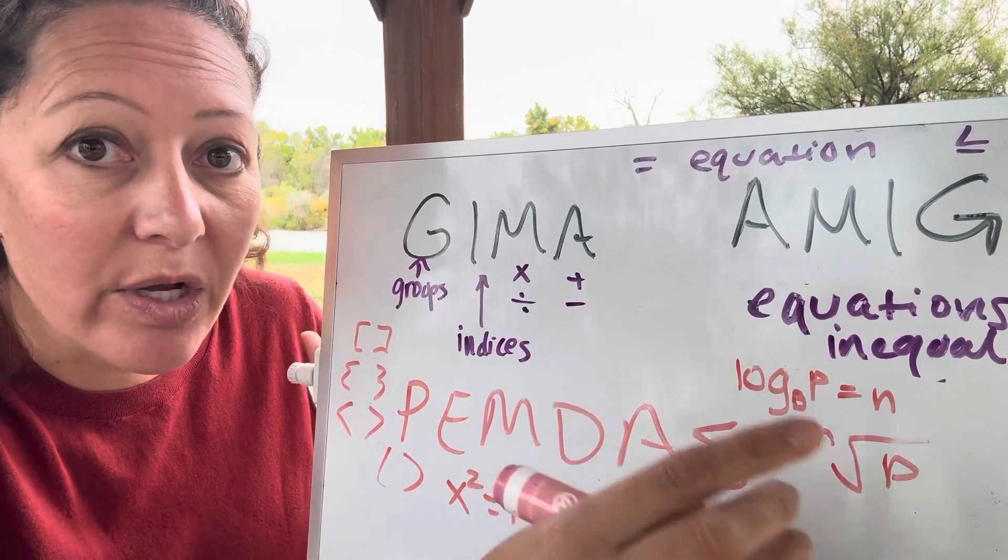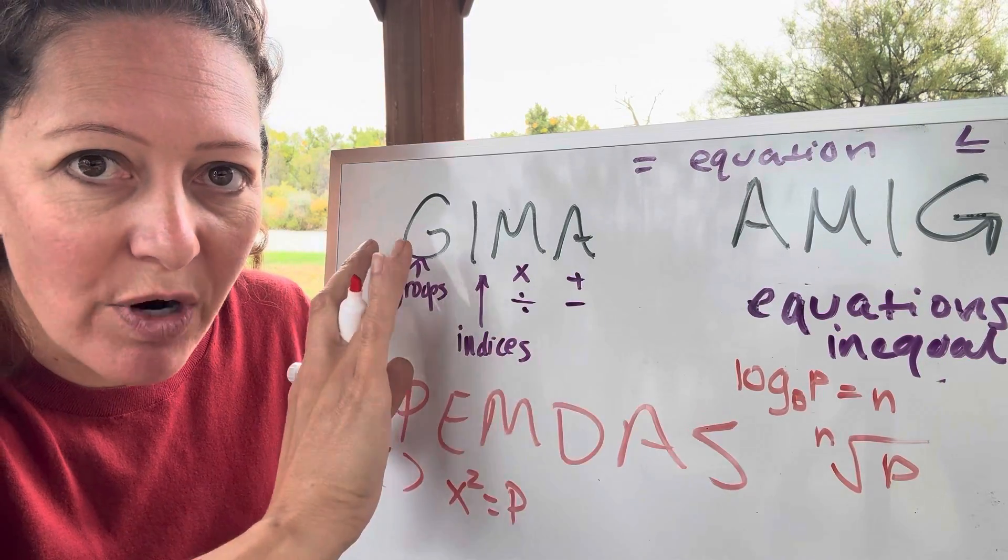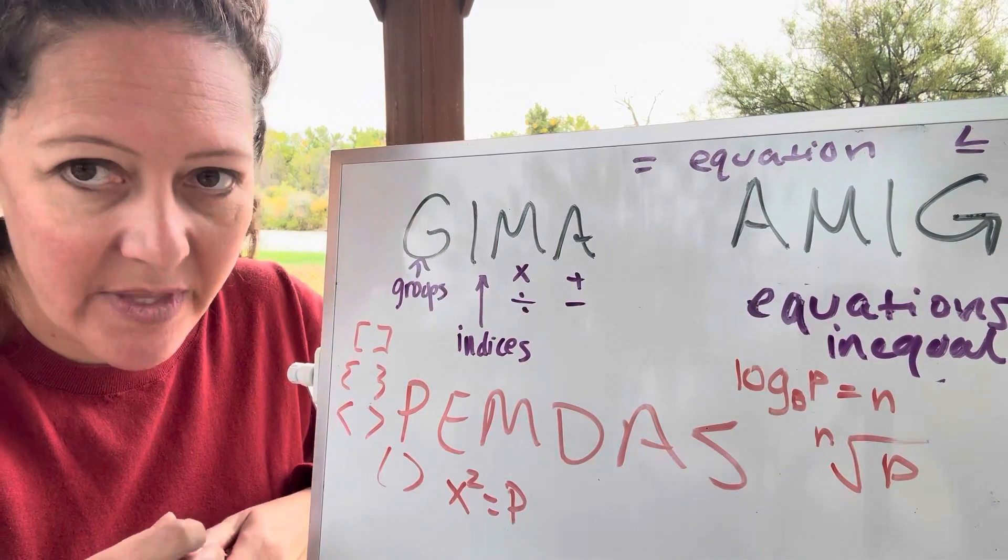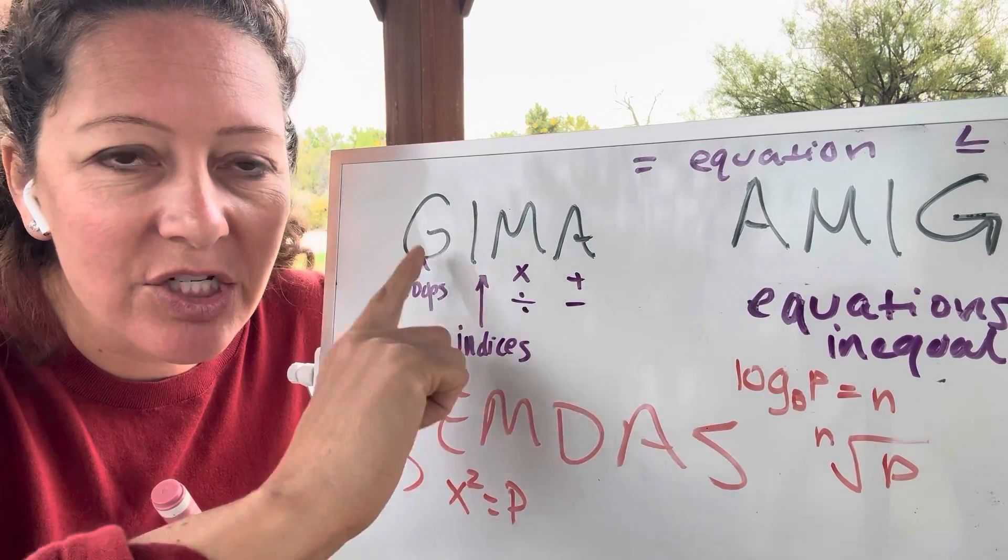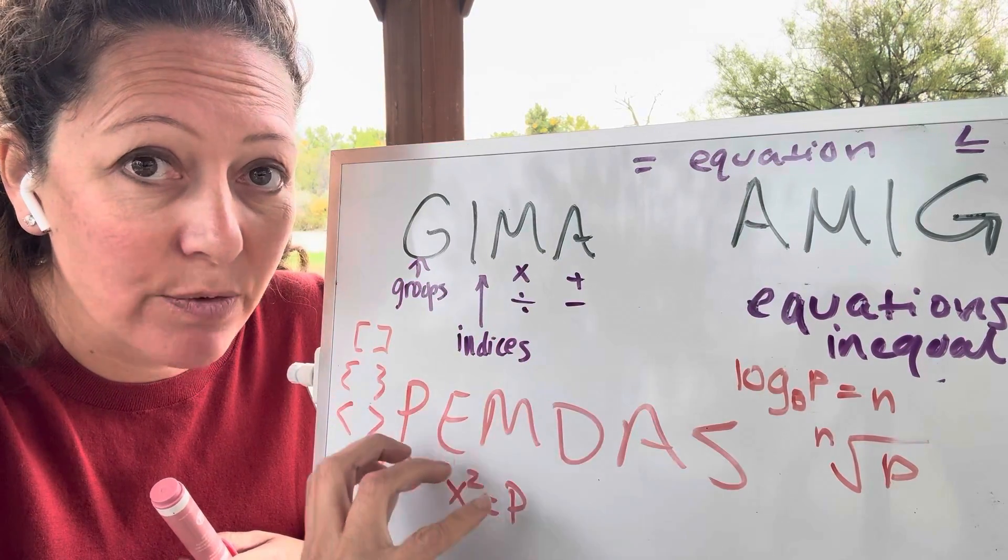Same with addition and subtraction. One is not more important than the other. They're inverse operations. Just read your problems from left to right. Okay, so that's a little comparison of how the GIMA ties back to PEMDAS.